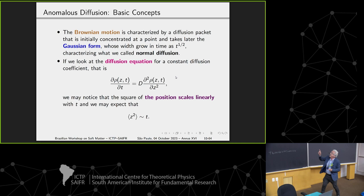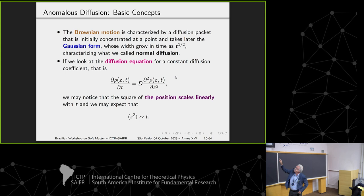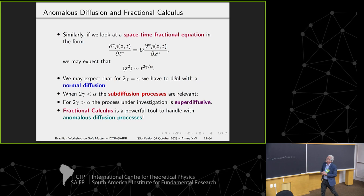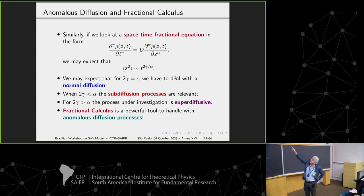When he understood the diffusive process, he obtained the usual diffusion equation. If we analyze on dimensional grounds, Z square, which is the mean square displacement essentially, goes to T. Then we expect this is usual diffusion. We can conjecture that if we introduce a derivative of order gamma in T and a derivative of order alpha in the position, we expect the mean square displacement goes that way.